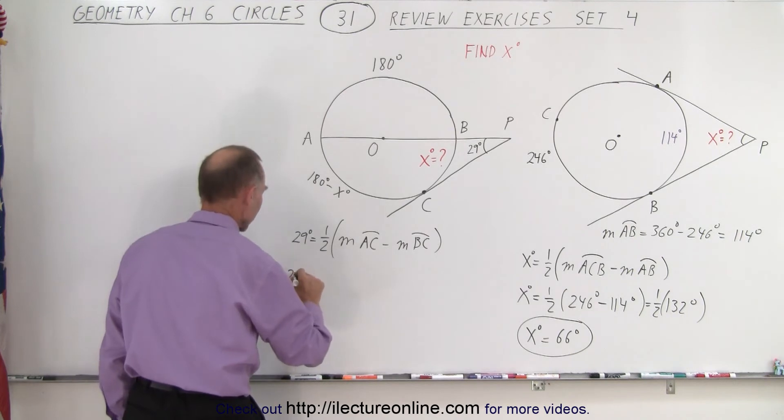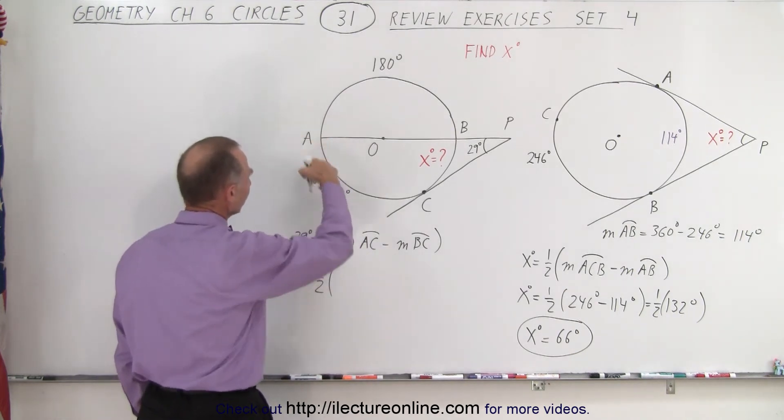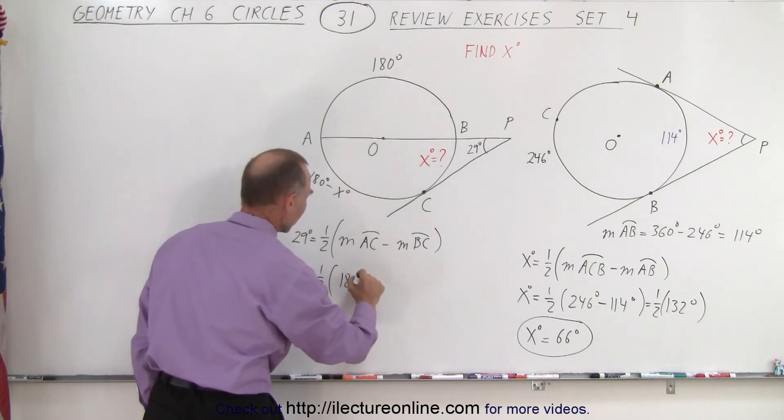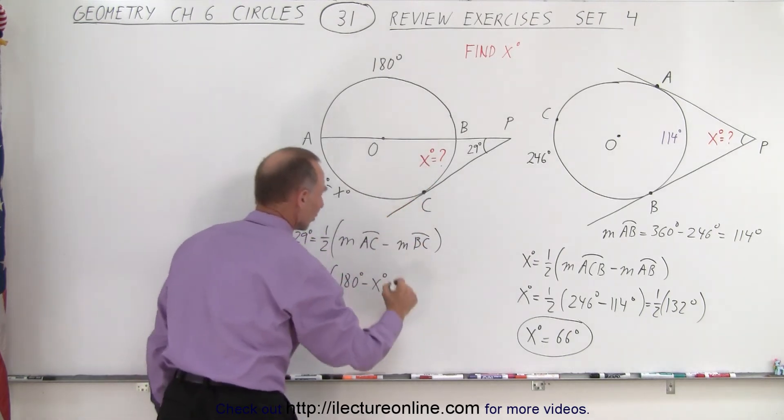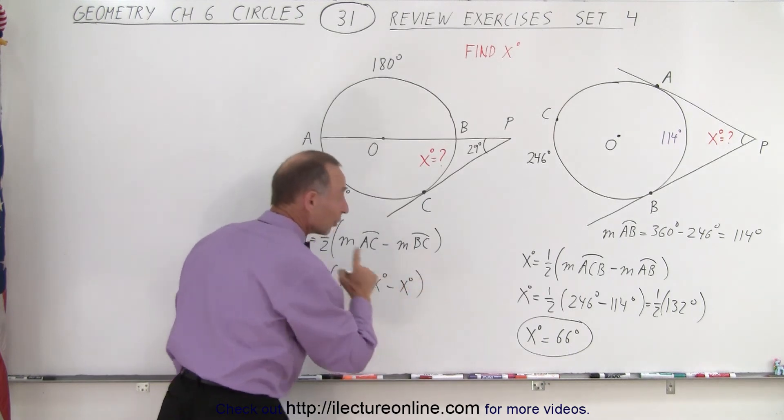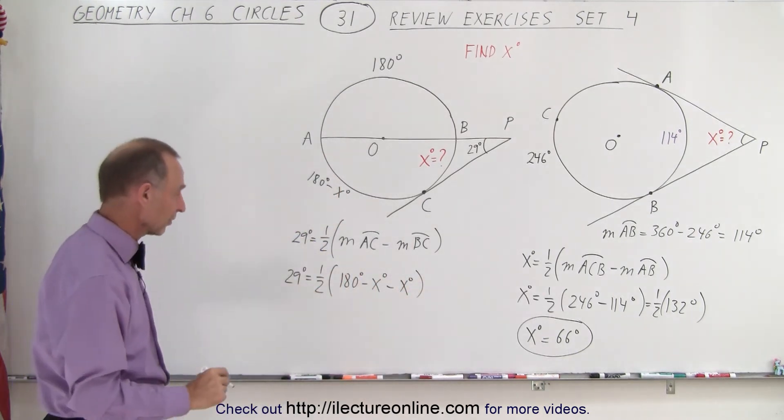Alright, so that means that 29 degrees is equal to one half times, the measure from A to C is 180 degrees minus x degrees, minus the measure from B to C, which is x degrees. And then we simply have to solve that equation for x.